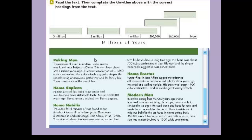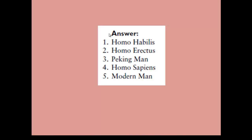Now let's come back to the timeline. Here we have three million, meaning three million years ago, then two million, one million, 500,000 years, 250,000 years till now. We have to complete these spaces with the correct words. Here are the answers: number one, Homo Habilis; number two, Homo Erectus; three, Peking Man; four, Homo Sapiens; and Modern Man. We can put these words in the correct order.